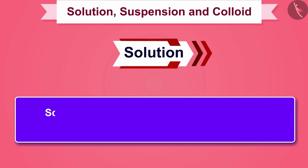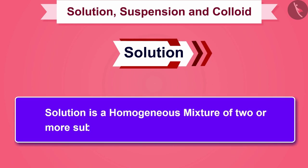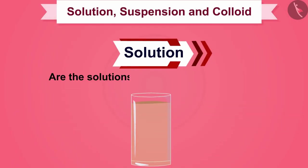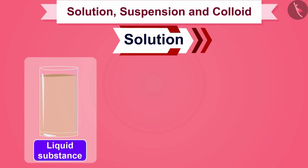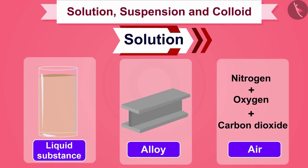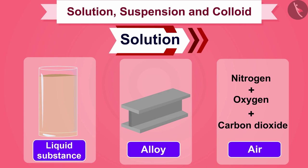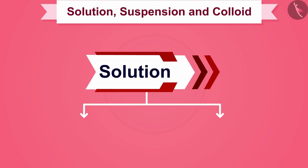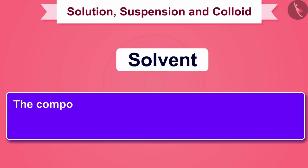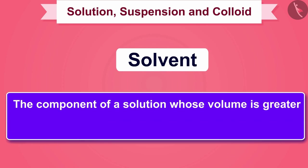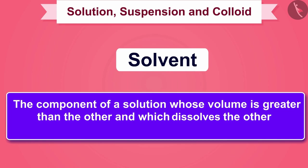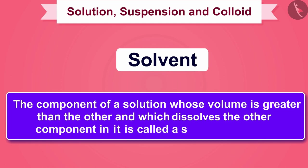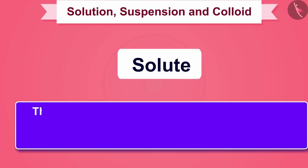From this example we can say that a solution is a homogeneous mixture of two or more substances. Are solutions only in the form of liquid? No, we can also have solid solutions such as alloys, and gaseous solutions such as air. We can divide any solution into two parts: solvent and solute. The component of a solution whose volume is greater and which dissolves the other component is called a solvent.